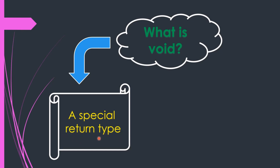Whenever we execute a method, a value is returned as output and that value has a data type, which is defined by the return type. So return type defines the data type of the return value. But why is void a special return type? It is special because of the purpose for which it is used.